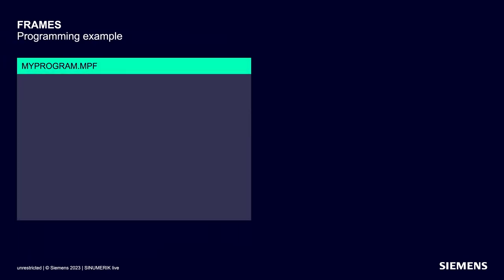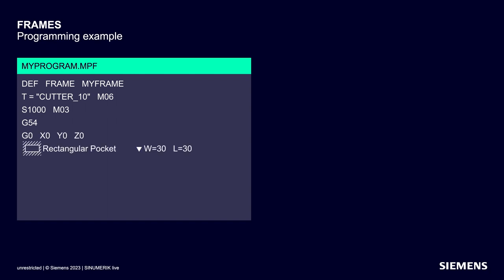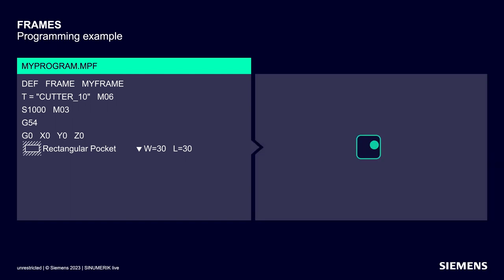Let's take a look at the whole thing in a CNC program. The CNC program is already open in the editor. First, a user variable of the type frame is defined, named myframe — essentially the cabinet with the 12 drawers just mentioned. This is followed by the tool, spindle speed and work offset. We then traverse to the origin of the workpiece coordinate system to rough a rectangular pocket with a width and length of 30 millimeters.